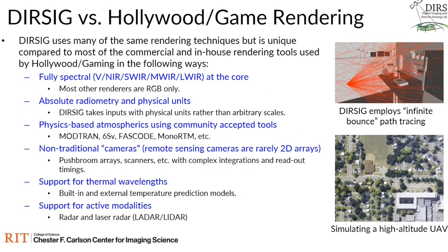DIRSIG is a physics-based renderer. One of the first questions people ask is what makes it different. Let me start with what makes it the same: these days DIRSIG uses the same rendering techniques used in state-of-the-art renderers in Hollywood, open source, commercial, and gaming engines — specifically, DIRSIG underneath the hood is a path tracer. From each pixel being rendered, we trace out tens if not hundreds of rays that head into the scene, and each ray results in a multi-bounce link between that pixel and sources of illumination through the scene. This is why we call it an infinite-bounce or global illumination tool — considered the state-of-the-art rendering technique for physics-based renderers today.